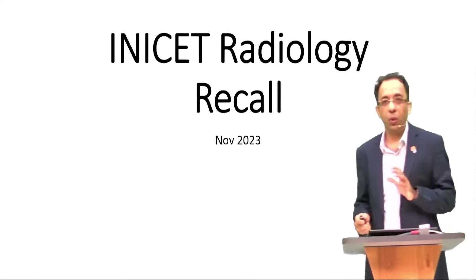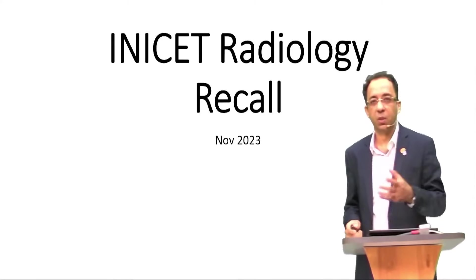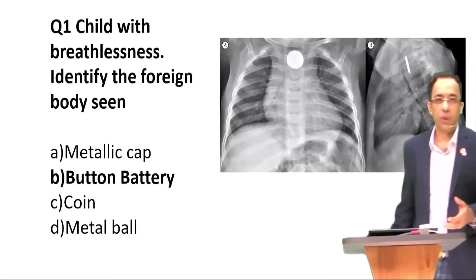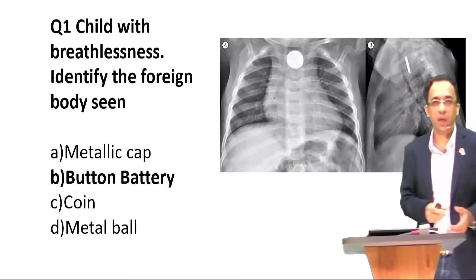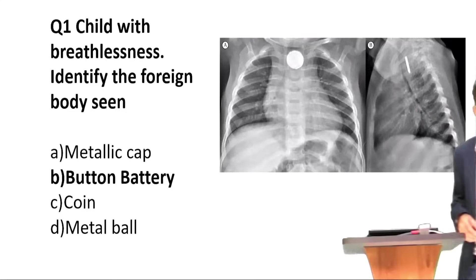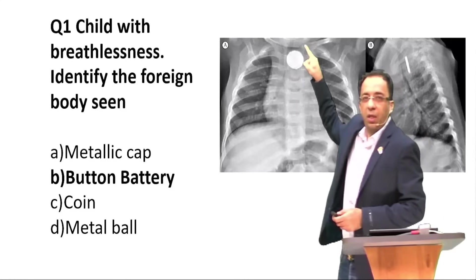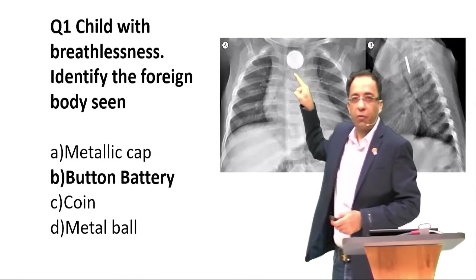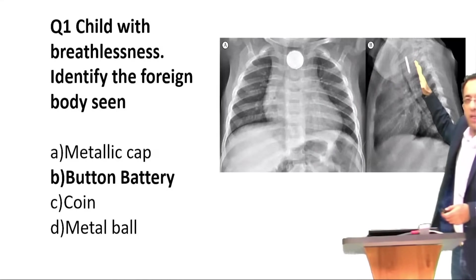What I will do is show you the questions. There were only a few questions in radiology and we will quickly tell you the answers and discuss. This question had a child with breathlessness who had taken in a foreign body, and X-ray PA and lateral view of the chest was shown. In the X-ray, the foreign body is seen in its full circumference in the AP view and seen like a slit in the lateral view.